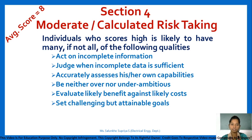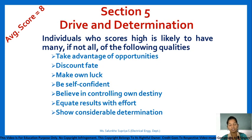Section 4 is related to moderate or calculated risk taking. An individual who scores high in this section acts on incomplete information, judges when incomplete data is sufficient, accurately assesses their own capabilities, is neither over nor under ambitious, evaluates likely benefits against likely costs, and sets challenging but attainable goals.